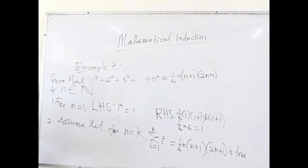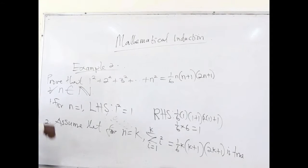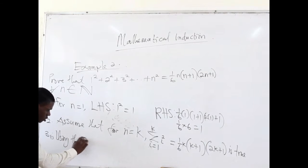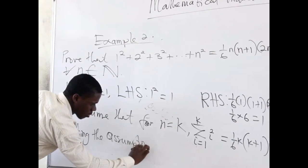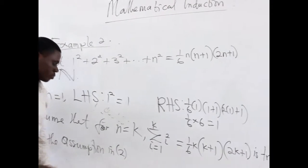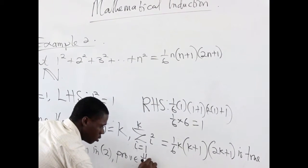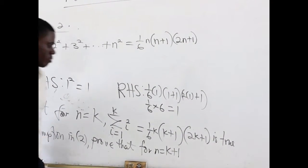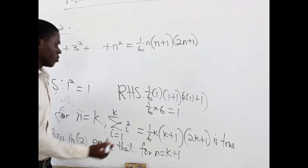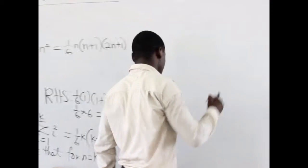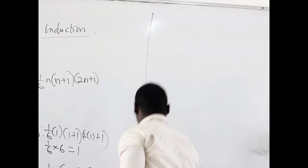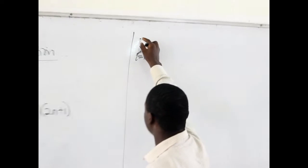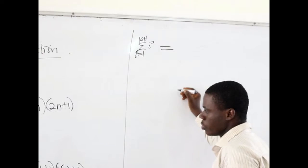If we assume that this is true, then we can base on this assumption to prove that for n equals k+1. We must be reminded that k+1 is the successor of k. So we are going to say that the summation of i squared from i = 1 up to k+1 will be equal to — let's see what happens here.